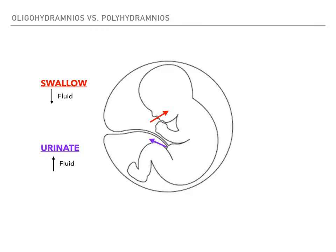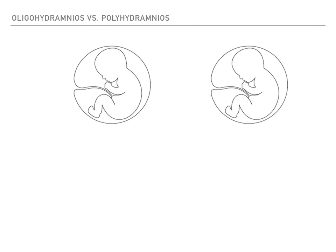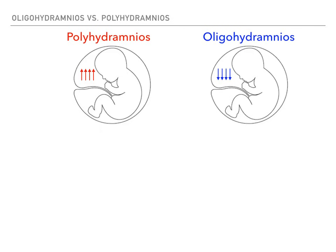Let's talk about the difference between oligo and polyhydramnios. Here you see our same drawing side by side. If there's too much fluid in the amniotic space - marked by the red X's - that is called polyhydramnios. By contrast, if there's too little fluid in the space marked by the blue X's, that's oligohydramnios. Polyhydramnios means too much amniotic fluid; oligohydramnios means too little amniotic fluid.